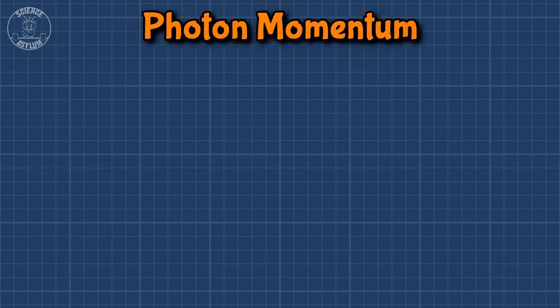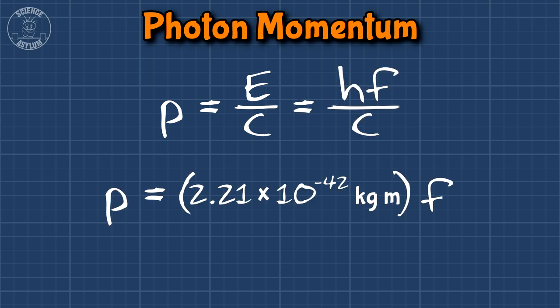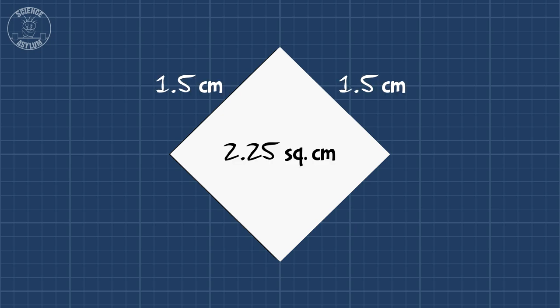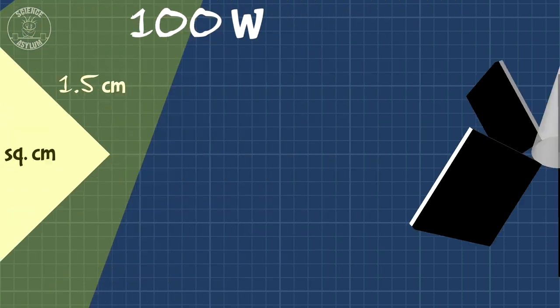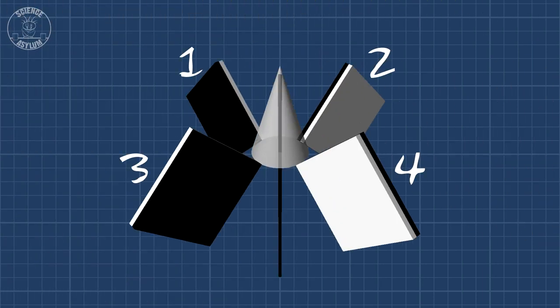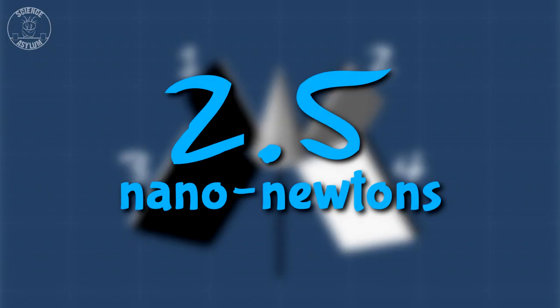There's a slight problem though. The momentum of a single photon is proportional to its energy and therefore its frequency. That is a seriously tiny number. When you consider the dimensions of a radiometer vane, the type of, strength of, and distance to your light source, and finally multiplied by 4, you get 2.5 nano-newtons. That's itty bitty.